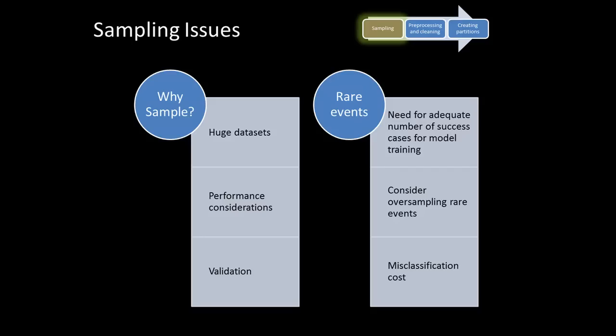So why do you want to sample? It's because you have huge data sets. If you try to perform data mining on massive data sets with millions and millions of rows, you're not going to get a much better improved model, but it's going to take a lot of time and effort. You also want to sample because you want to validate the model. And for rare events, you need to consider oversampling, which we'll talk about shortly.